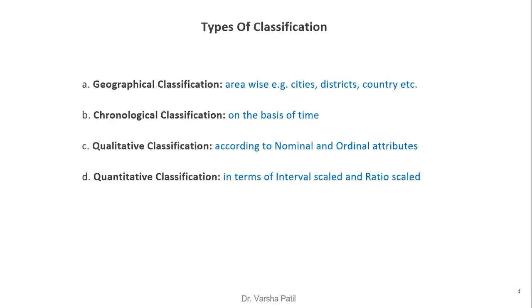Types of classification: there are four types. First is geographical classification — as its name indicates, it is area-wise. Second is chronological classification, that is on the basis of time. Third is qualitative classification, according to nominal and ordinal attributes. Fourth is quantitative classification, in terms of interval and ratio scale variables.